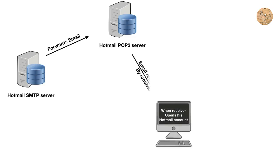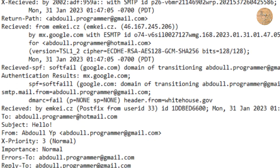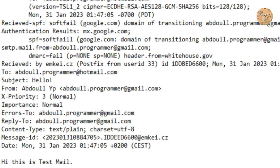When the receiver opens his email client — that is, when he opens his Hotmail account — his client is going to pull all the unread emails from the POP3 server of Hotmail. The email we sent has reached the POP3 server of the receiver, so the receiver will now retrieve it. This is how email works in a nutshell. But if you look closely at the email header, you can notice that there is no authenticity — no factor to ensure that the email is actually coming from a valid sender.